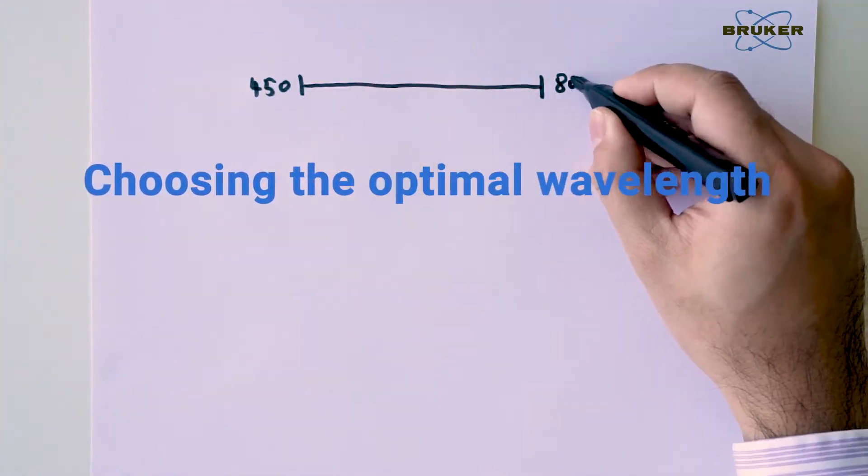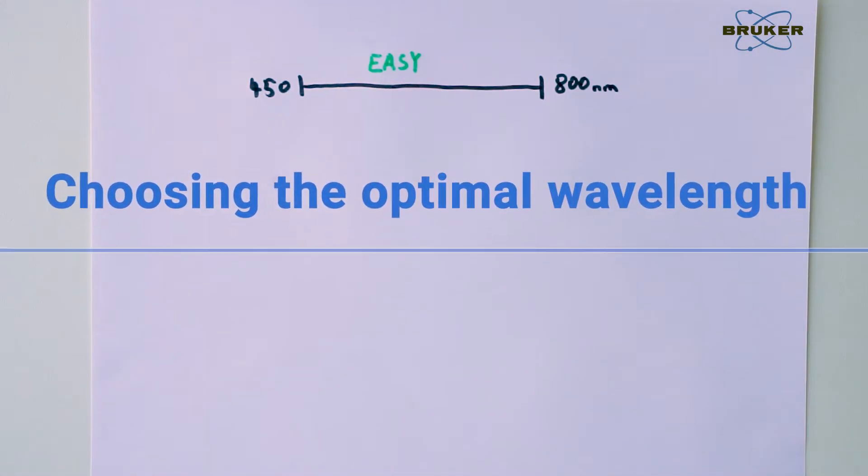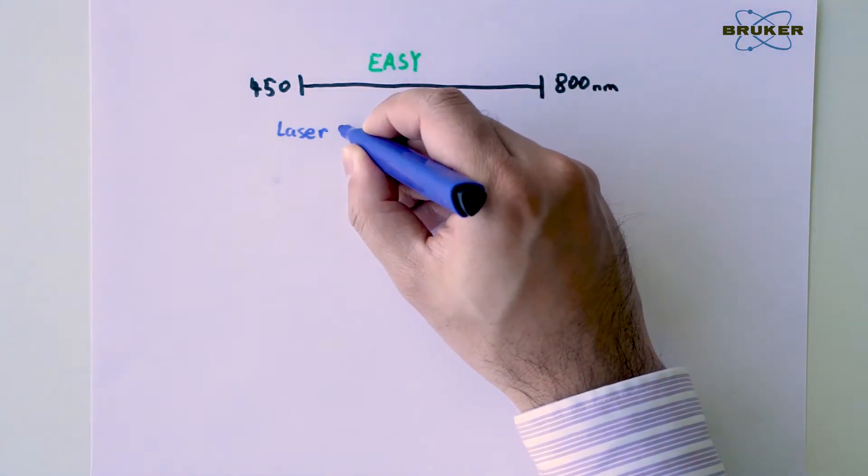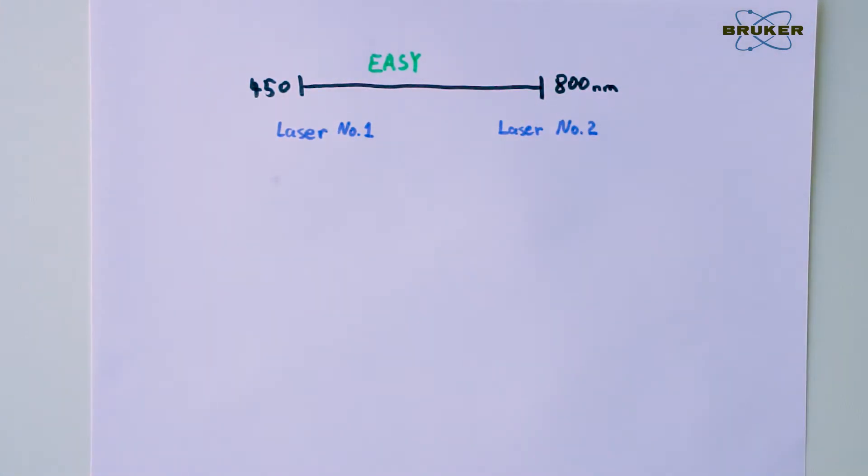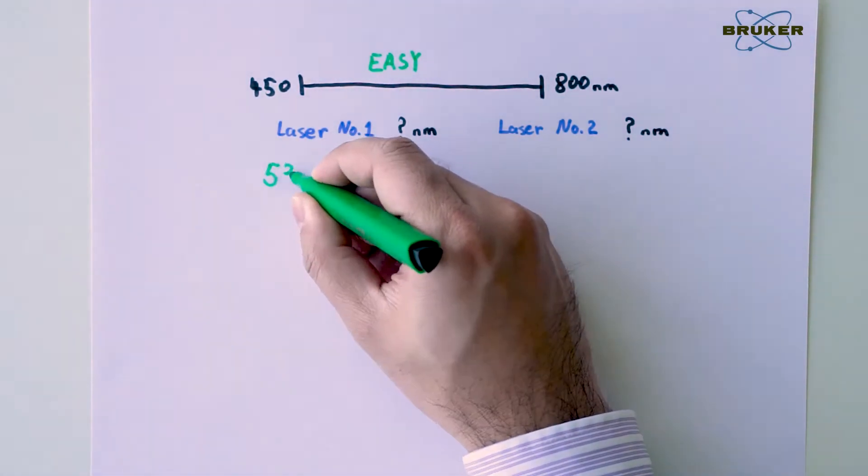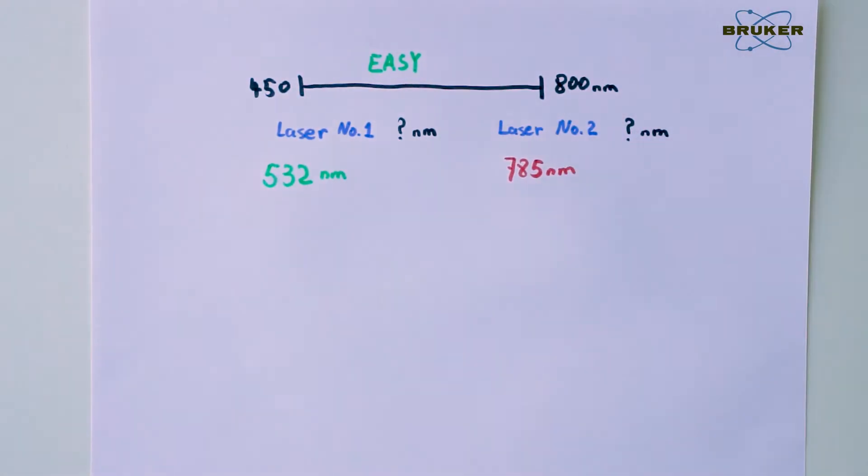We understand that Raman spectroscopy with the laser in 450nm to 800nm range is something of a sweet spot. Unfortunately, there is no one laser wavelength that is suitable for all applications.